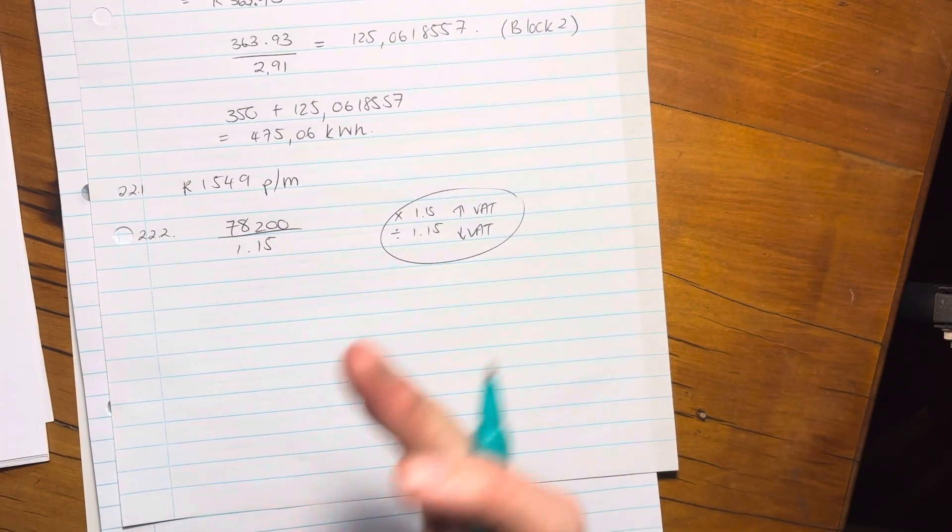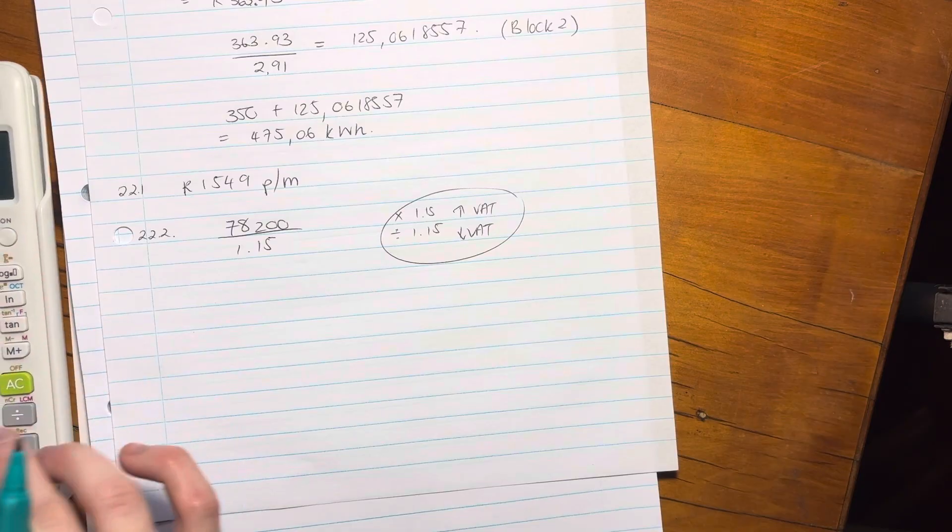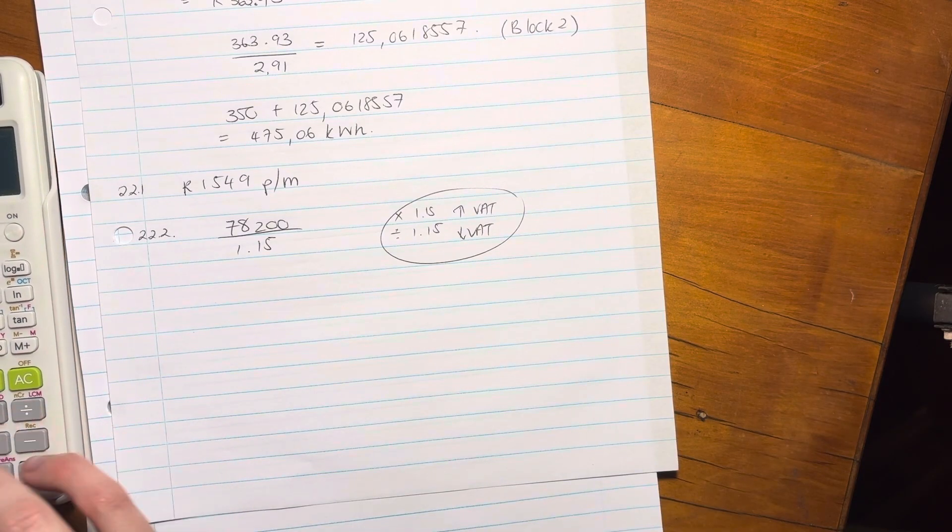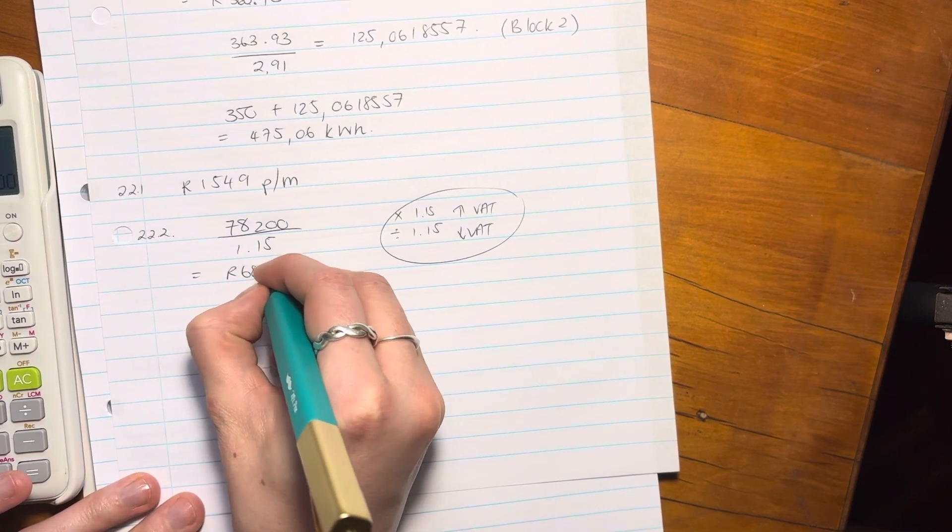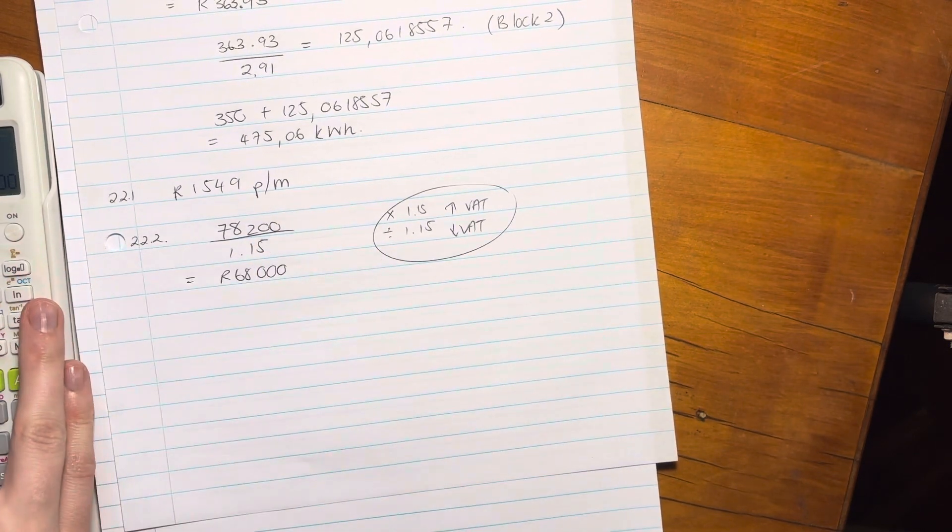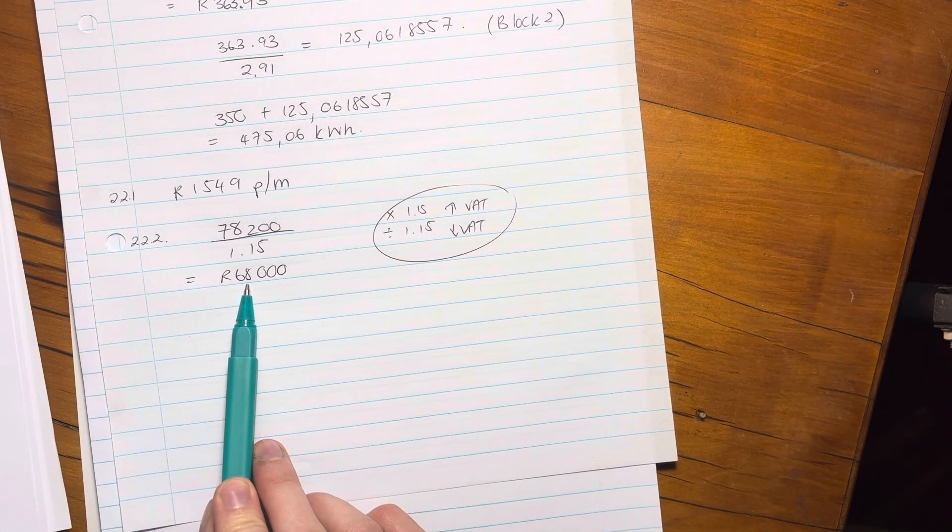Please remember you need to know that VAT is 15%. So you pop that in. R78,200 divided by 1.15 and the answer is without VAT, the cash price of the solar system would be R68,000. So that's easy enough, right?